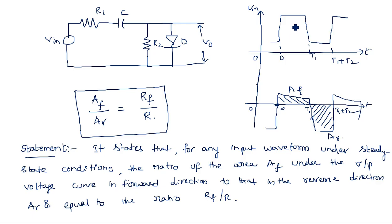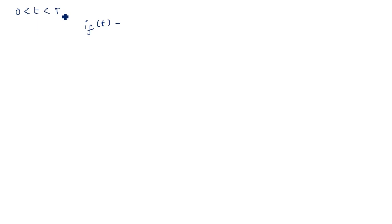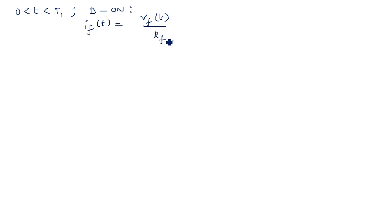In the interval 0 to t1, the input waveform is at the positive peak, so the diode turns on. The capacitor charges and current flows through the circuit. The forward current if(t) equals vf(t)/rf, where vf(t) is the voltage across the diode, which is also the output voltage.